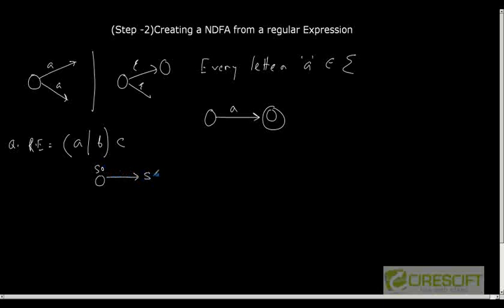We start with each letter. For a, I have a state S0 and I go to S1. I am not marking it as a final state because I'm in the intermediate process. I have to create the entire finite state automata for the entire regular expression.